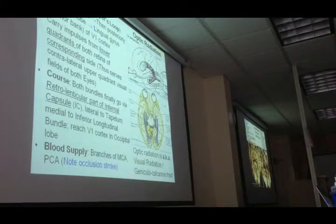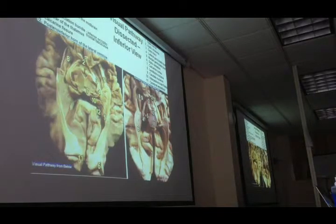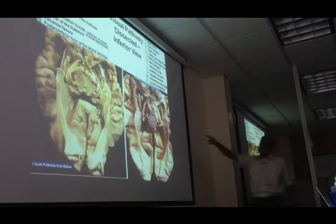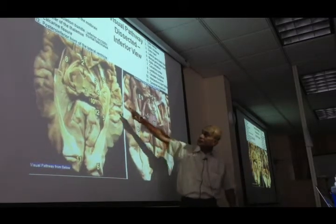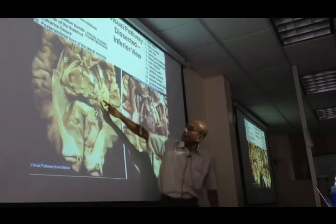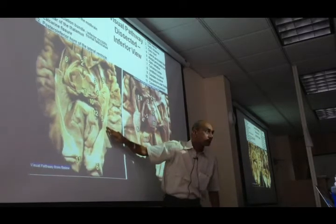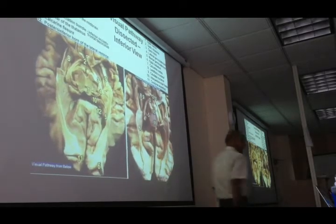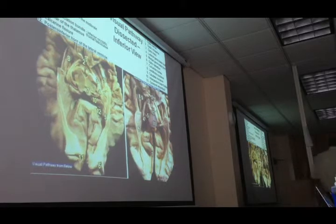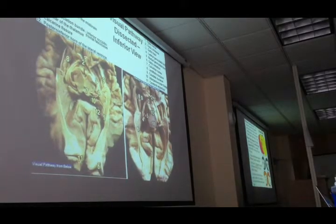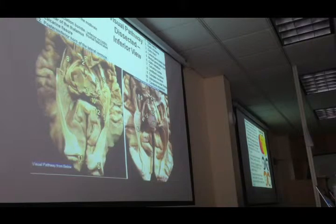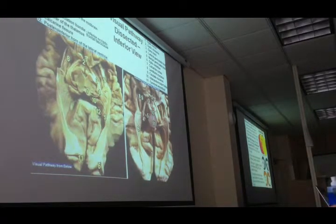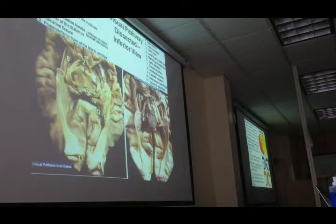This is the actual dissection of the visual pathway, and in the actual dissection it looks much the same. You can see the Meyer's loop fibers going forward and curving back, and the medial bundle and lateral bundle are clearly visible. So we have finished the visual pathway. Summary: retina, optic nerve, optic chiasma, optic tract, LGB, optic radiation — medial bundle and lateral bundle — cuneus gyrus and lingual gyrus. We must know every step because there are lesions at every level.